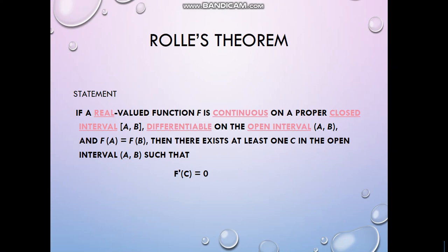Rolle's theorem says if we have a real valued function that is continuous on a closed interval — meaning endpoints are included — and we work on intermediate values, and f(a) equals f(b), then there exists at least one point in the open interval such that the derivative of the function at that point equals zero.